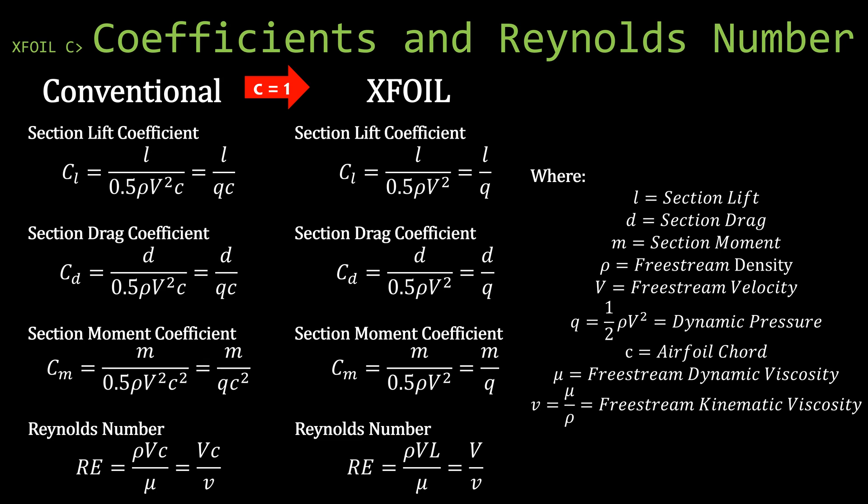Starting on the left side of the slide, we have the conventional or traditional equations to calculate the section coefficients and Reynolds number. The reason I emphasize the word 'section' is because we are dealing in two dimensions here — we're ignoring any span-wise effects, just looking at the two-dimensional cross section and how free stream flow flows around the shape. The notation to signify section coefficients uses lowercase l, d, and m.